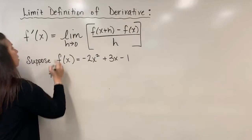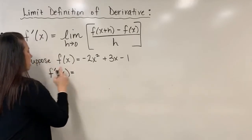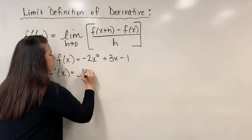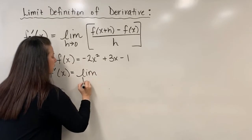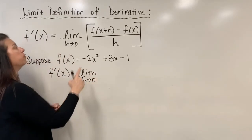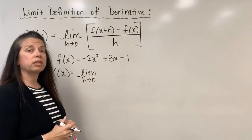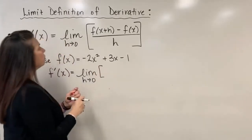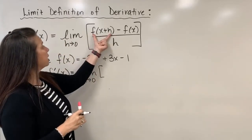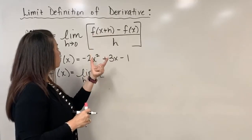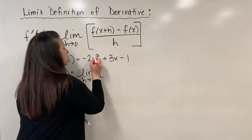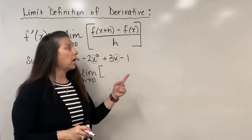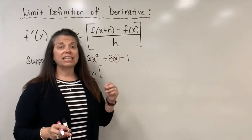We start out with the definition: f prime of x — this is our notation for the derivative — will equal the limit as h approaches 0. To find the first piece, f of x plus h, we go to our function and in both places where I see an input of x in this quadratic function, I need to put in x plus h instead.